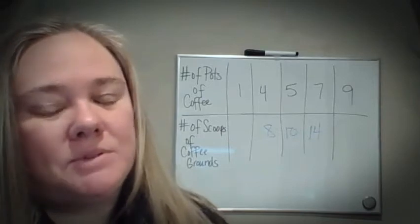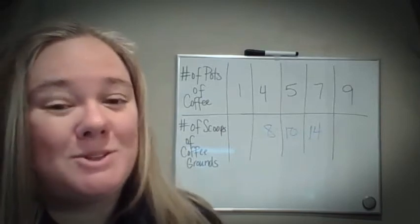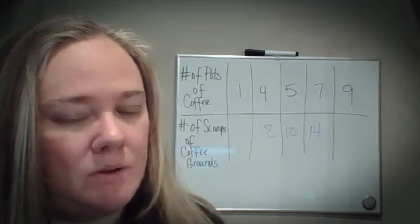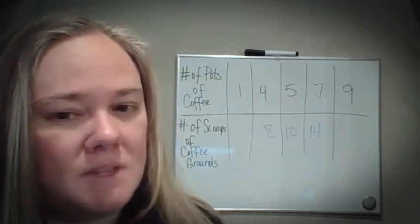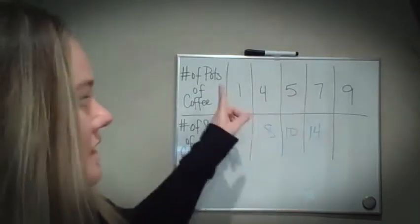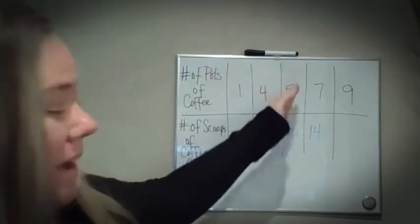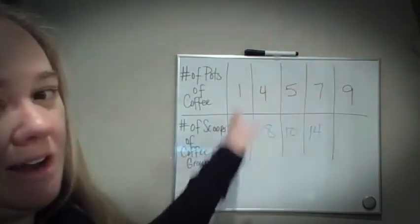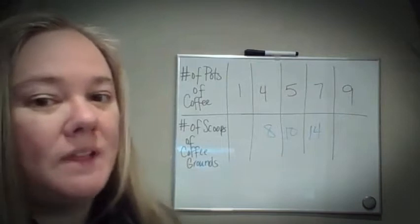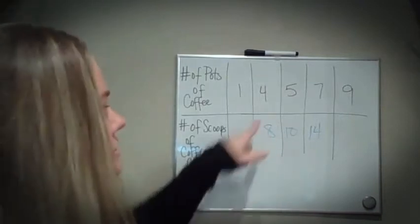Sometimes tables are useful because you can see patterns, but sometimes you can't see a pattern right off the bat. Especially as you go up with your integers — if it is not in a pattern here, it's not usually going to be in a pattern further along. So let's find our unit rate first.